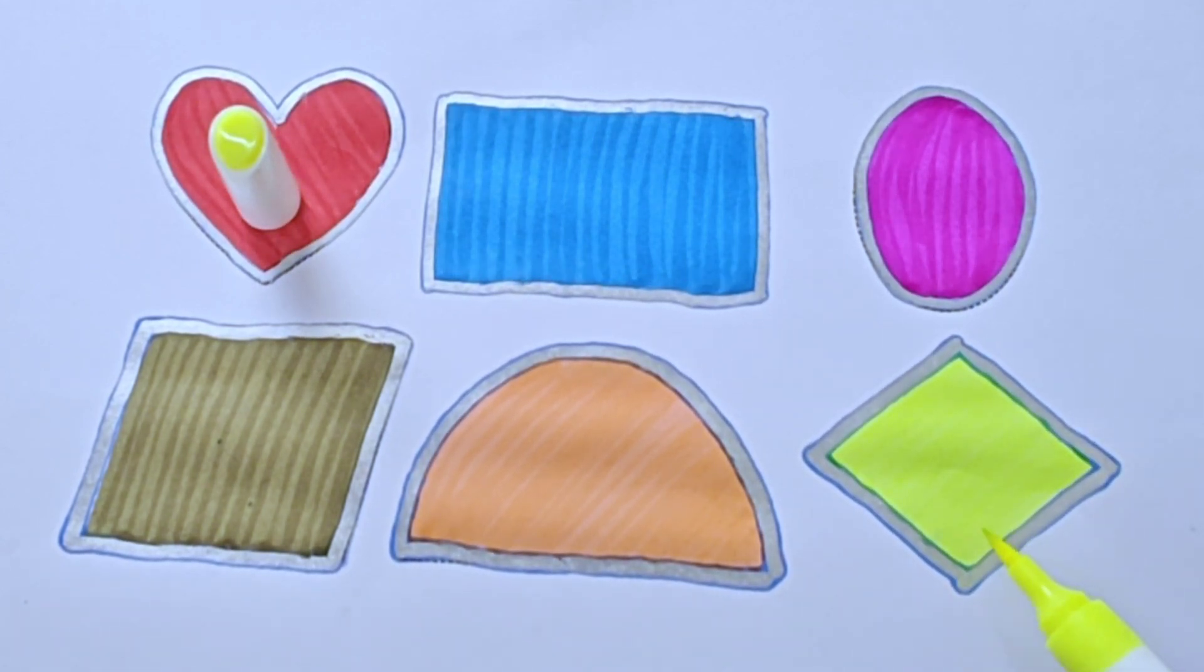It is rhombus or diamond. It has four sides: one, two, three, four. It is 2D shape.